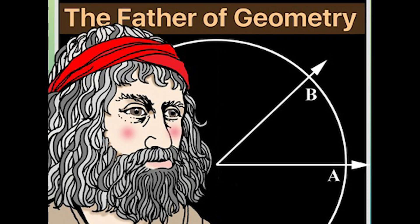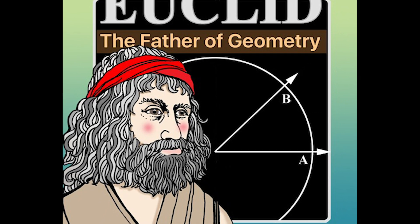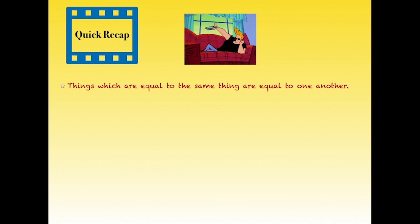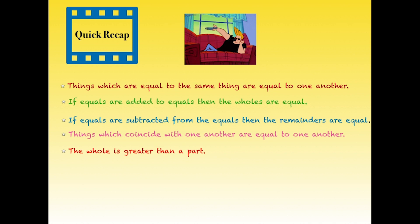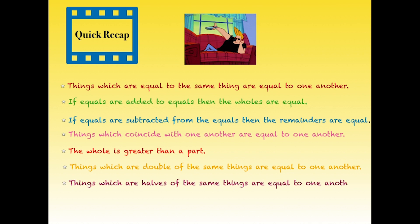To summarize all seven axioms: the first states that things equal to the same thing are equal to one another. The second states that if equals are added to equals, the wholes are equal. The third states that if equals are subtracted from equals, the remainders are equal. The fourth states that things which coincide with one another are equal to one another. The fifth states that the whole is always greater than the part. The sixth states that things which are double of the same thing are equal to one another. The seventh states that things which are halves of the same thing are equal to one another.